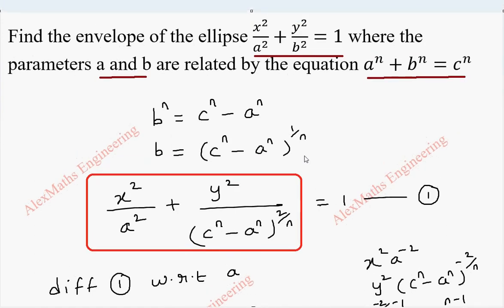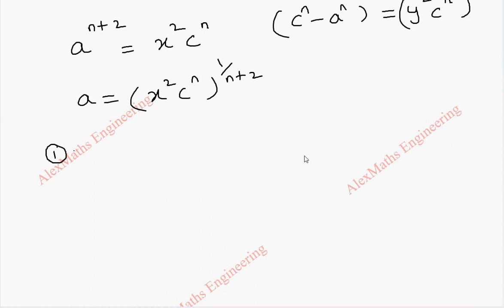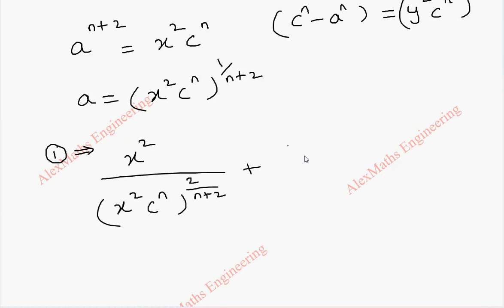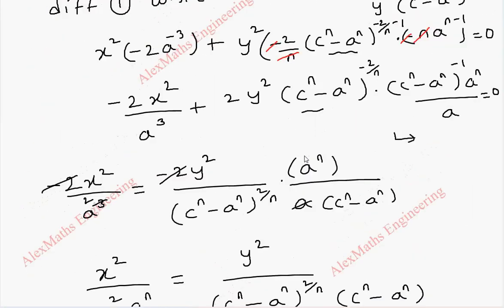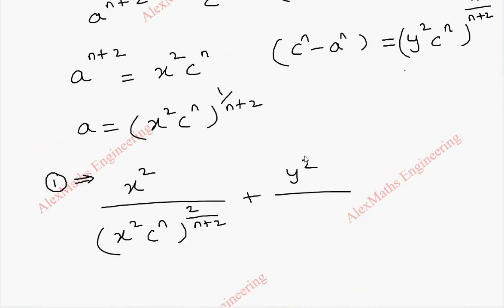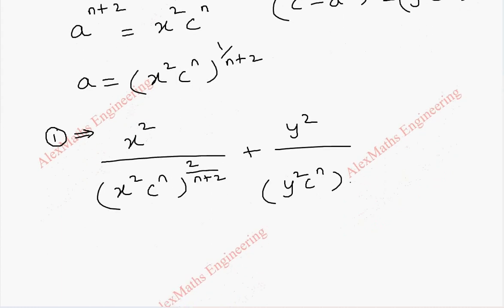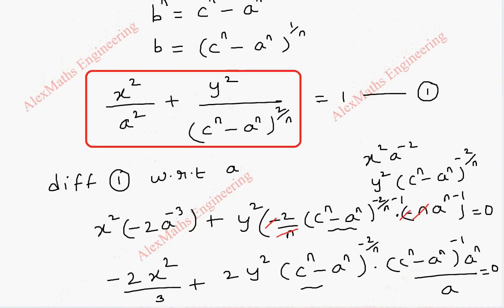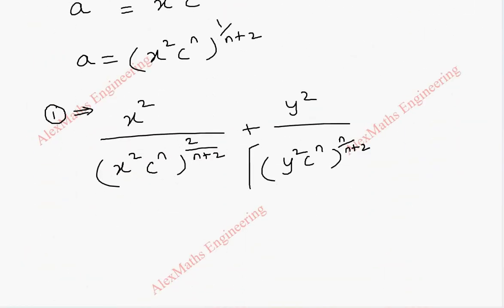Now substituting back into the first equation: x squared by a squared plus y squared by (c power n minus a power n) whole power 2 by n equals 1. From the expressions derived, x squared by a squared means x squared divided by (x squared c power n) whole power 2 by n plus 2, plus y squared divided by (y squared c power n) whole power n by n plus 2, taken to power 2 by n, equals 1. These two powers combine and cancel, and this is equal to 1.